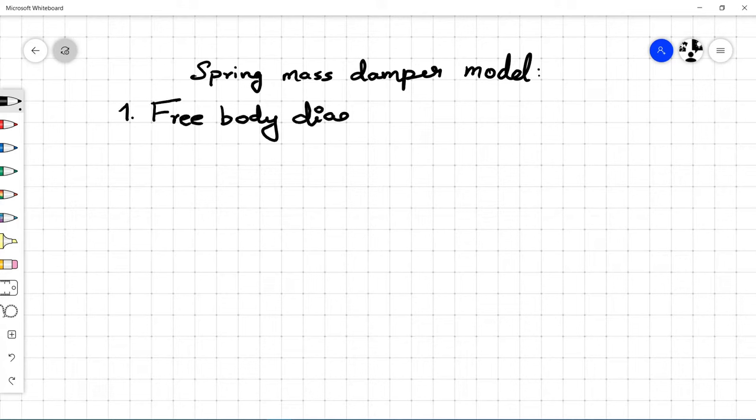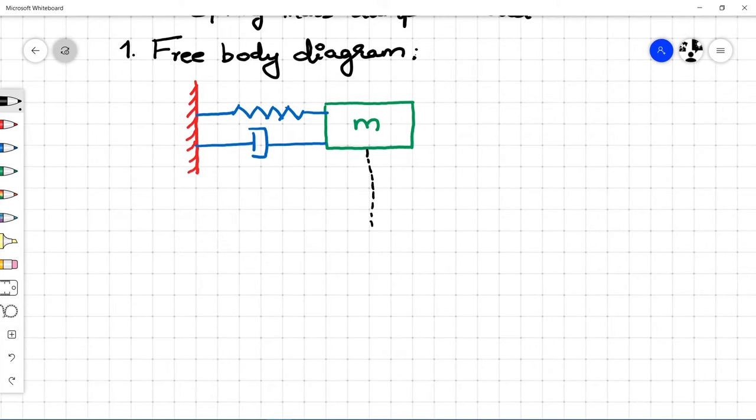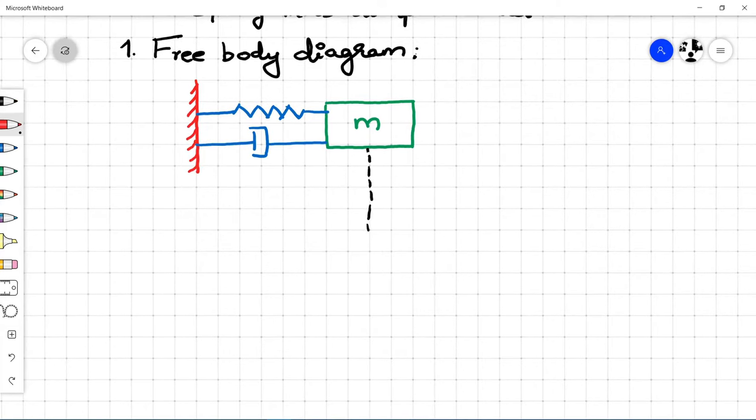First step is to draw the free body diagram of the spring mass damper system. Mass is connected to ground through spring and damper. Let's assume that there is no gravitational force so that the mass moves only in linear direction, the x-axis. Input given is the external force F and measured output is the displacement of the mass x.